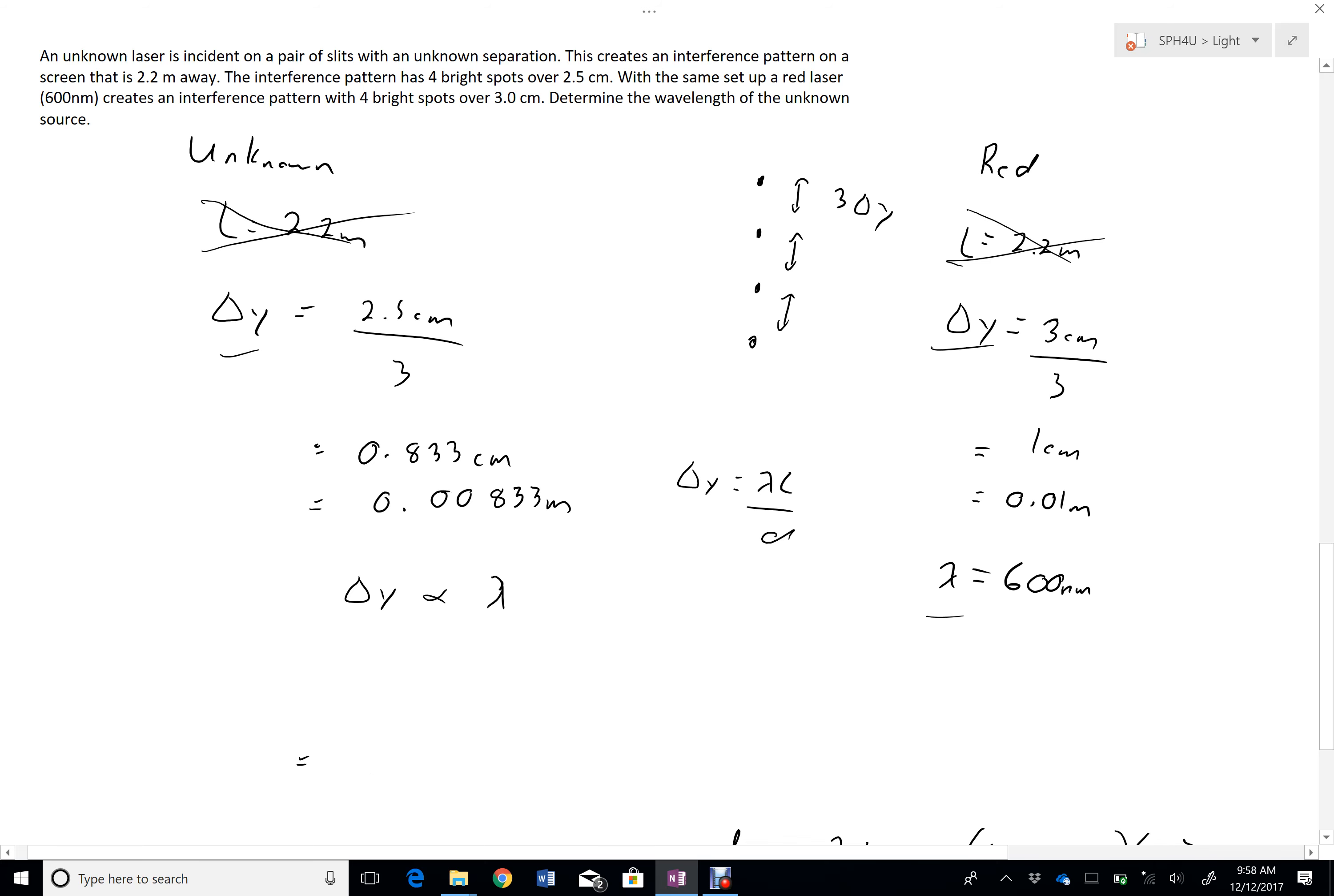So, if I want to figure this out, I can just set up a ratio. So, I can say lambda unknown over lambda red is equal to delta Y of the unknown over delta Y of the red, using the proportionality.